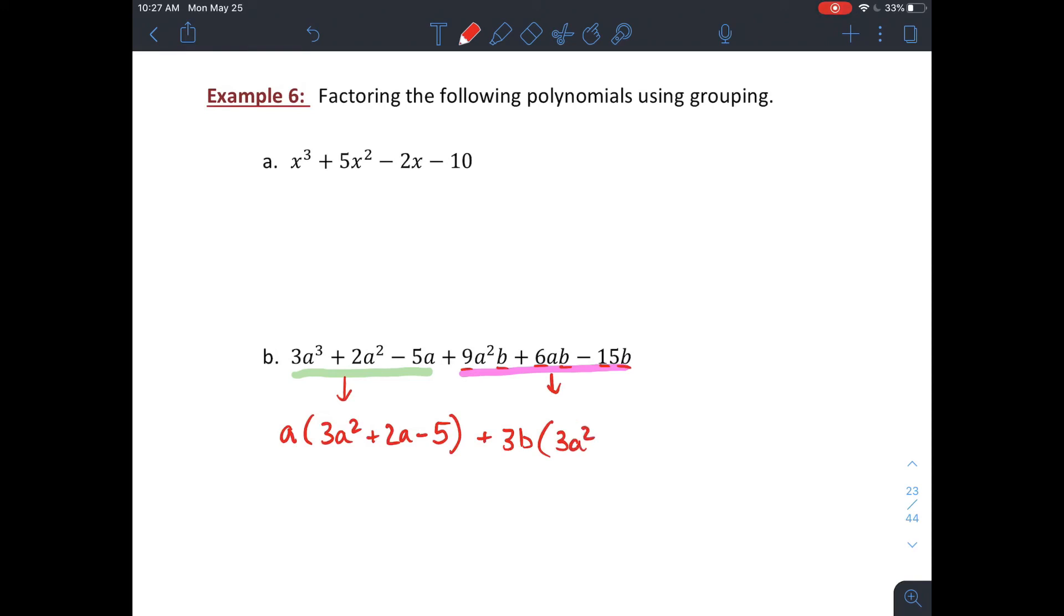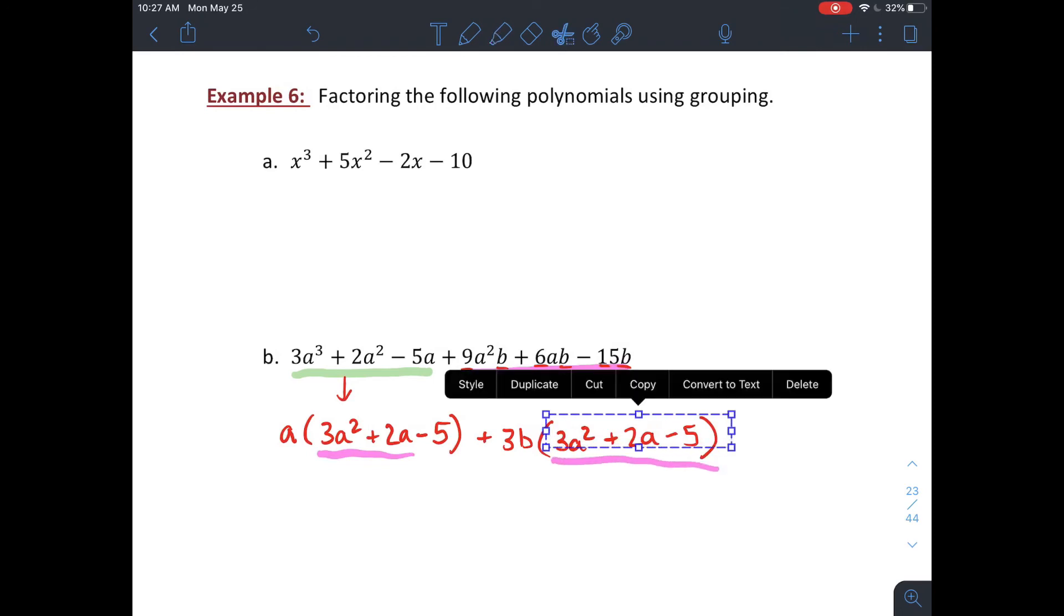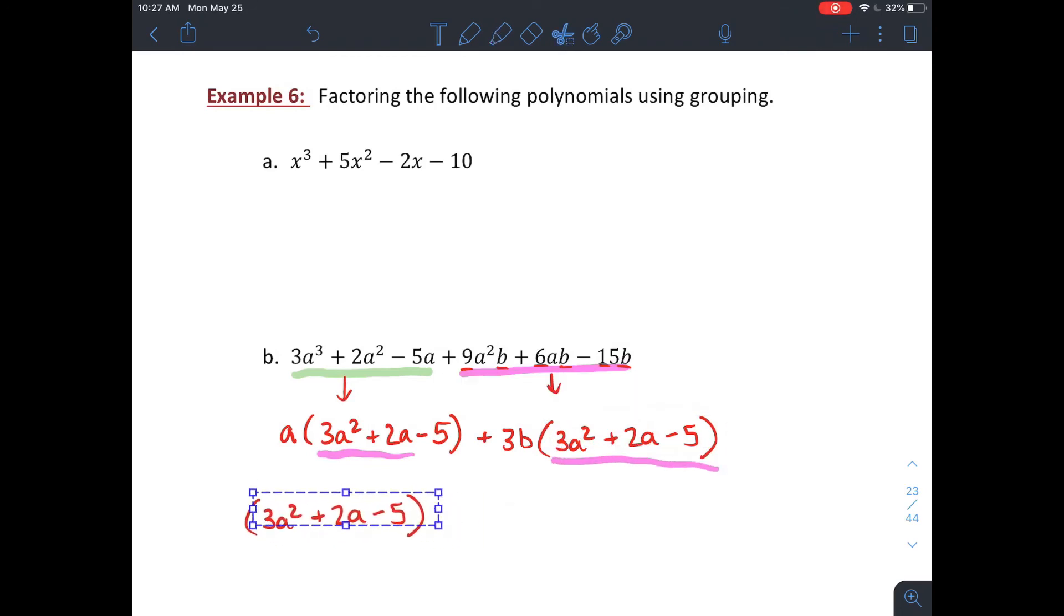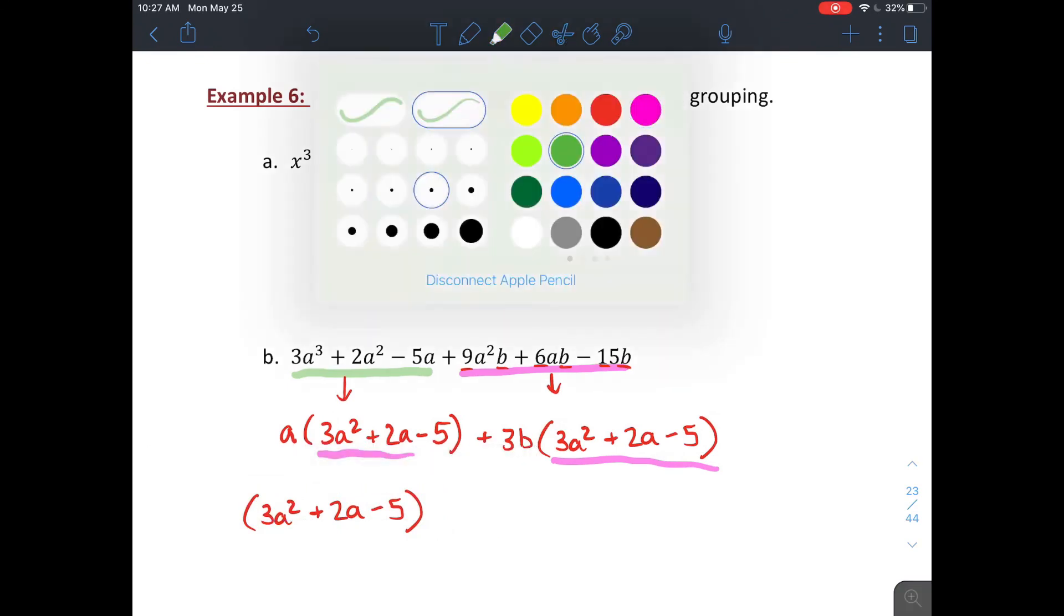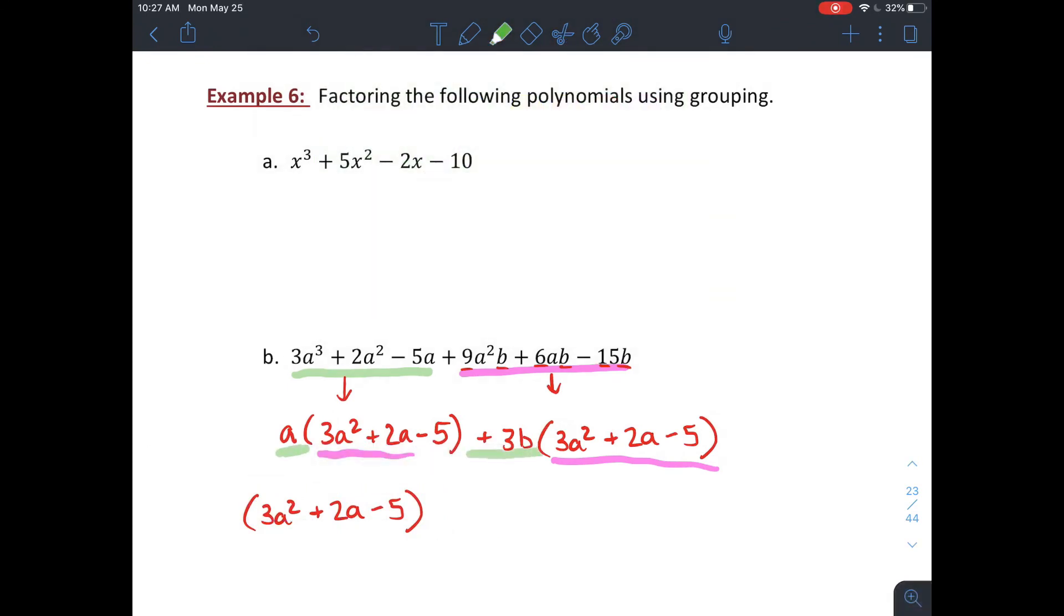That's going to leave you with 9 divided by 3 is 3. So I have your a squared, and then a 2a, and then 15 divided by 3 would be 5. Now they share that entire group of 3a squared plus 2a. So I'm going to factor that out. And then you'll be left with a second factor of a plus 3b.